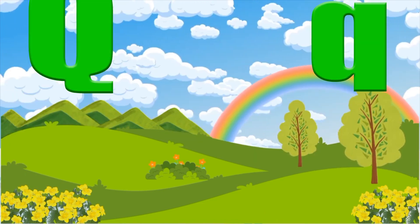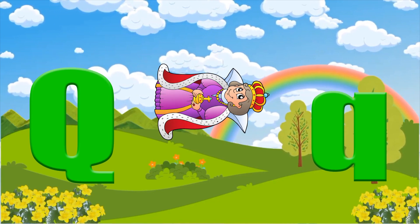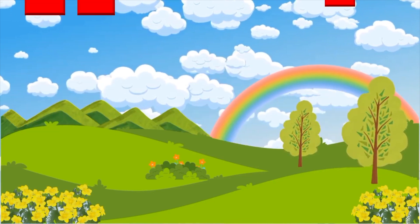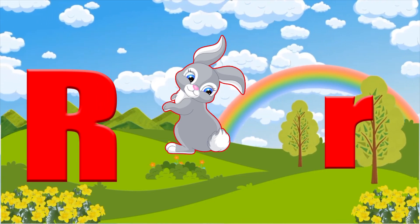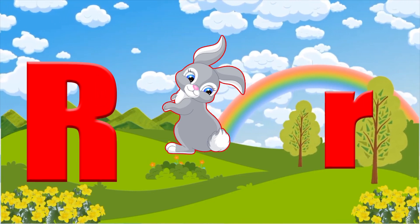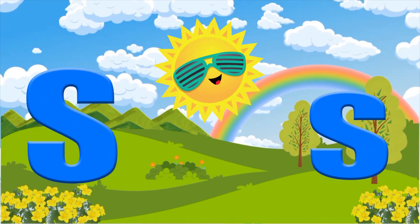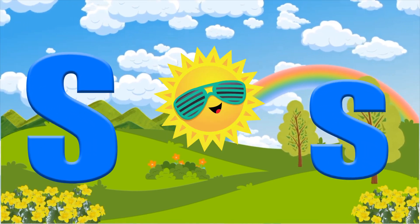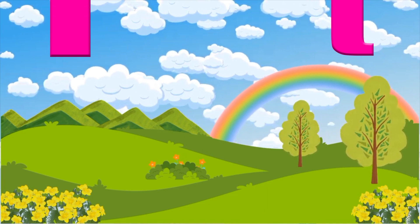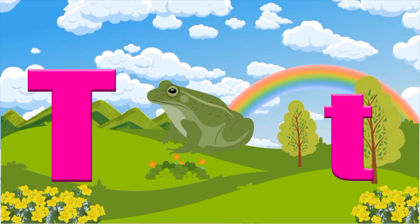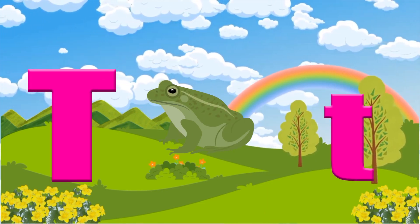Q is for queen, qu-qu-queen. R is for rabbit, r-r-rabbit. S is for sun, s-s-sun. T is for toad, t-t-toad.